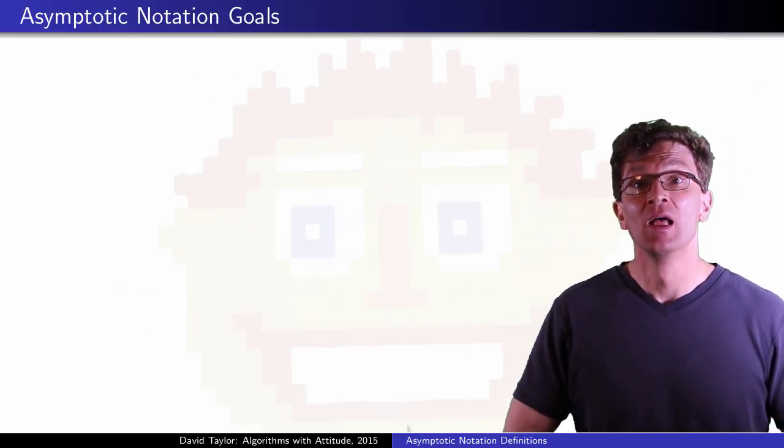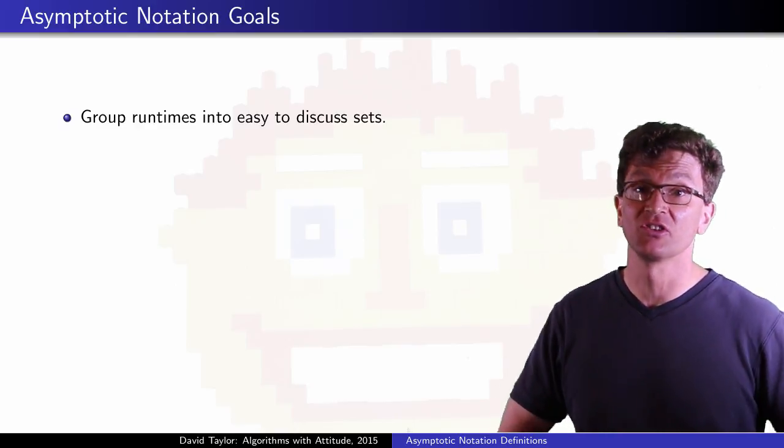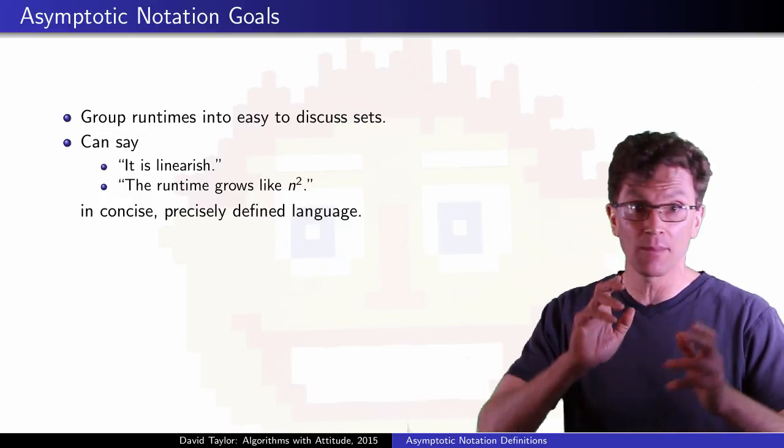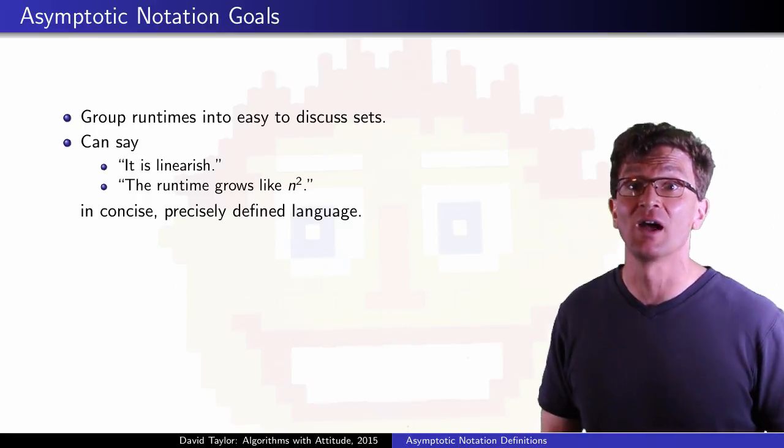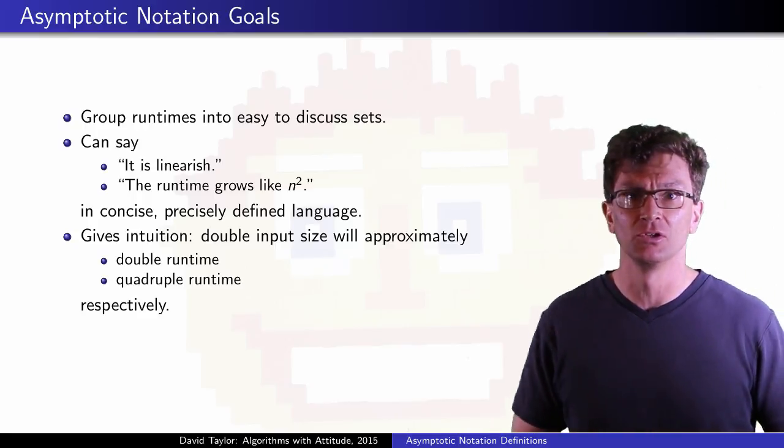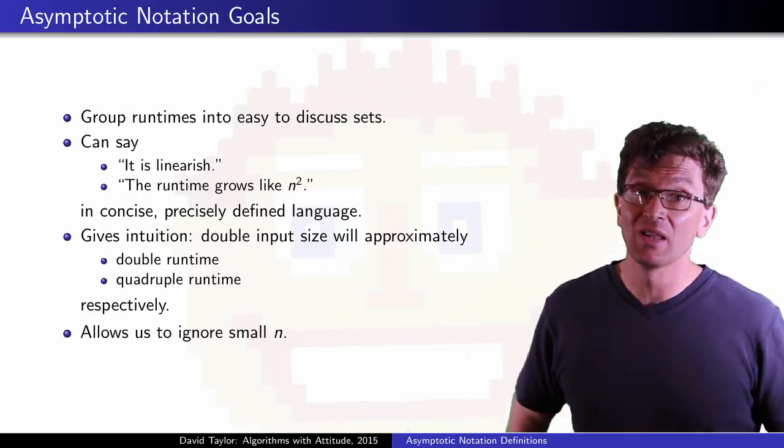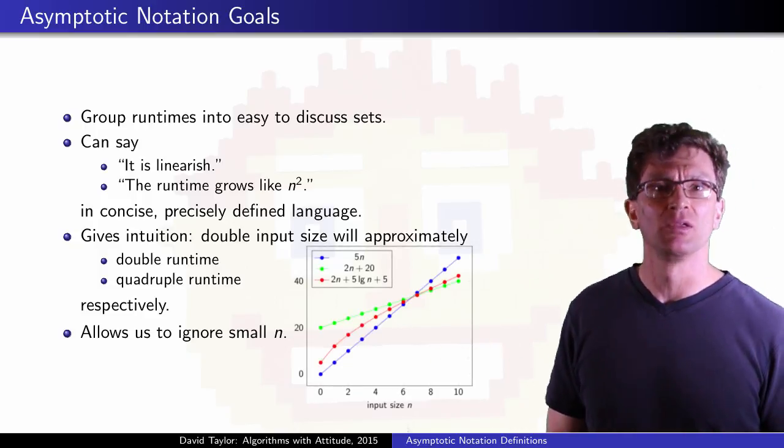Asymptotic notation lets us group runtimes into easy to discuss sets. We can say it's linear-ish, or the runtime grows like n squared, in concise, precisely defined language. It gives an intuition, like double the input size and you double the runtime, or quadruple the runtime. And it also allows us to ignore small n, like n less than 8 in that previous case.